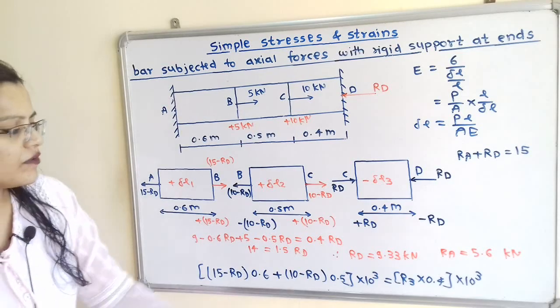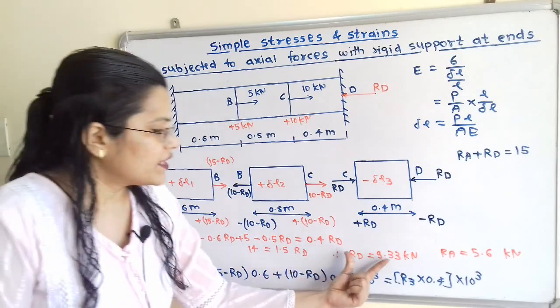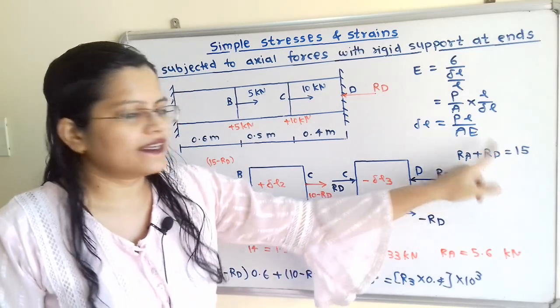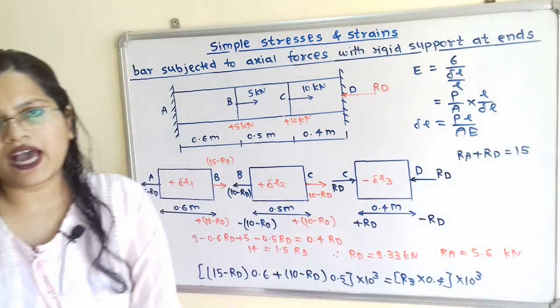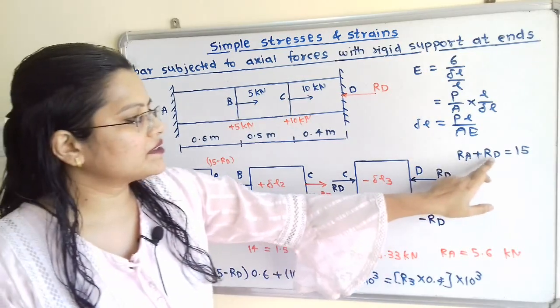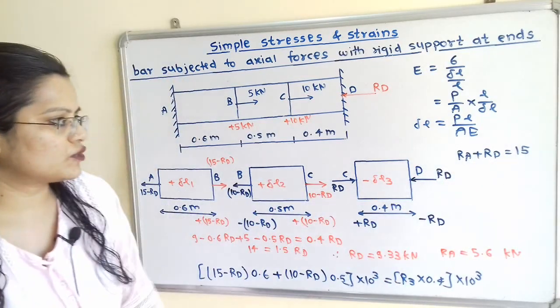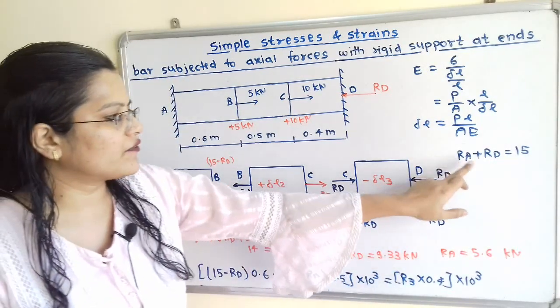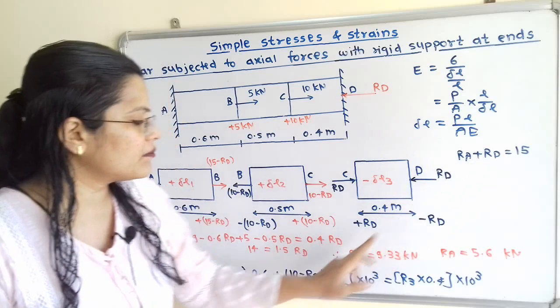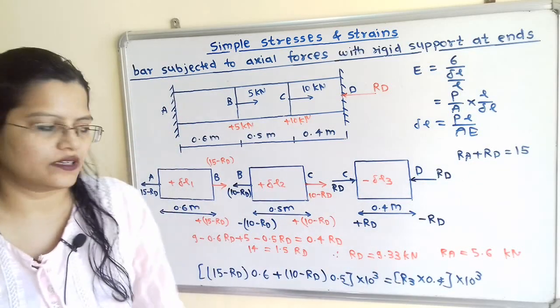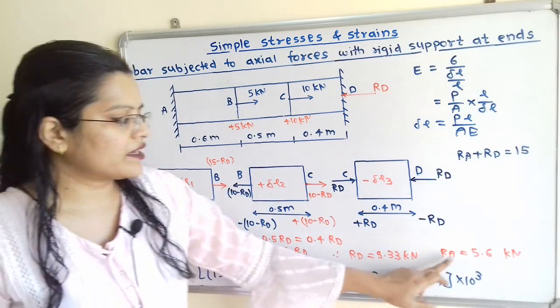Using the equation Ra plus Rd equals 15, we get Ra equals 15 minus 9.33, so Ra equals 5.67 kilo Newton.